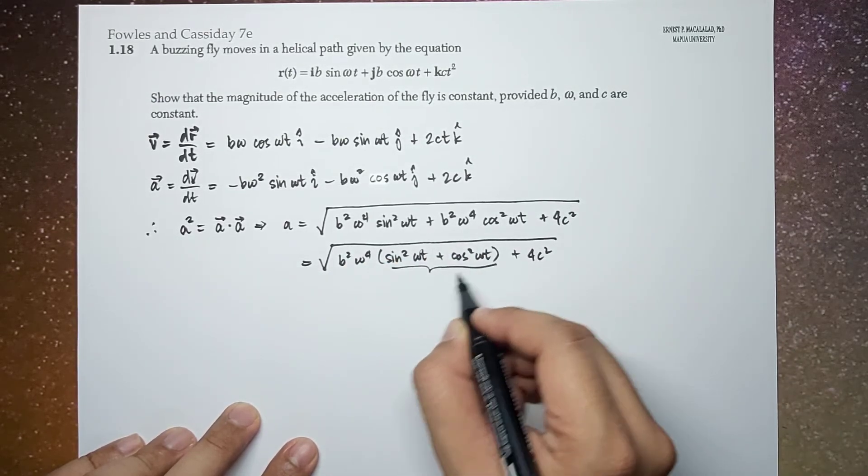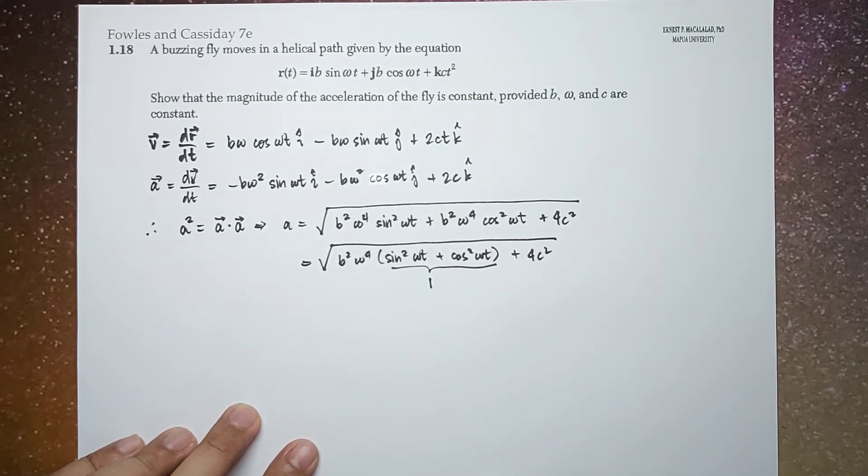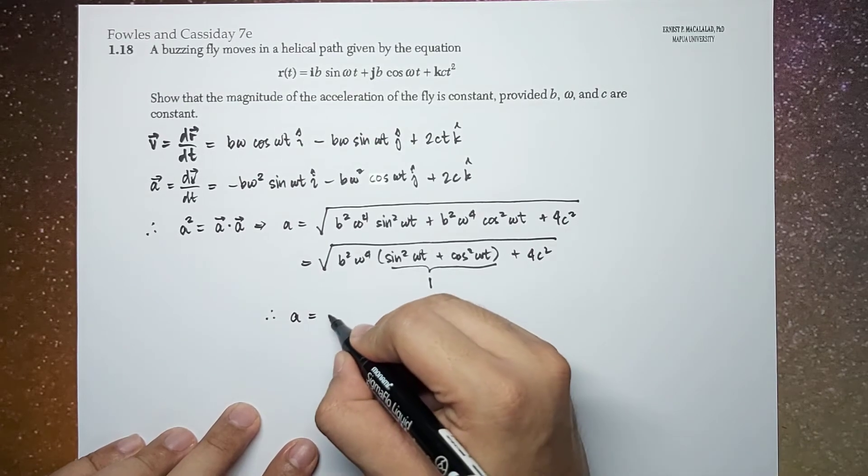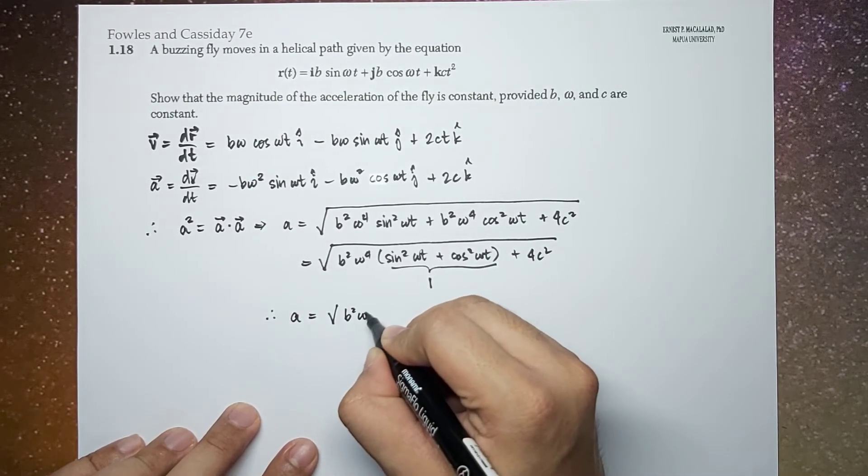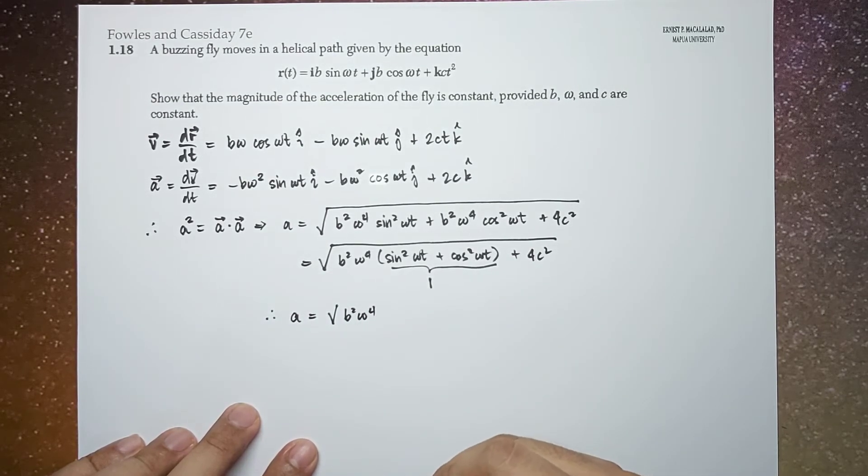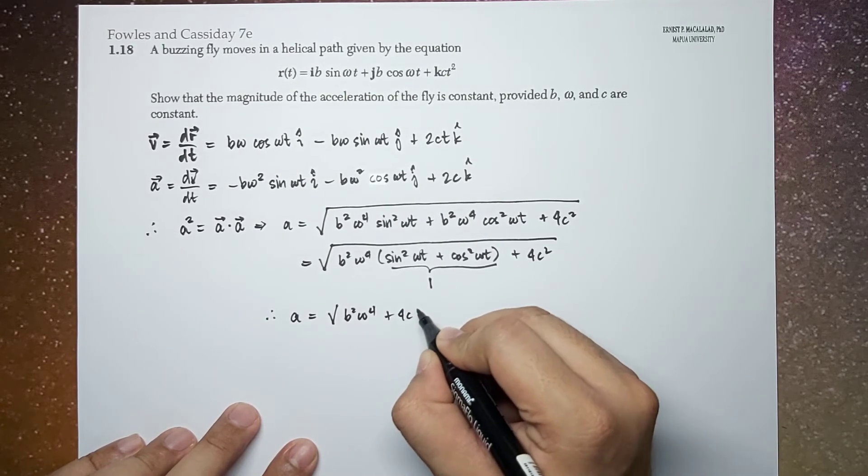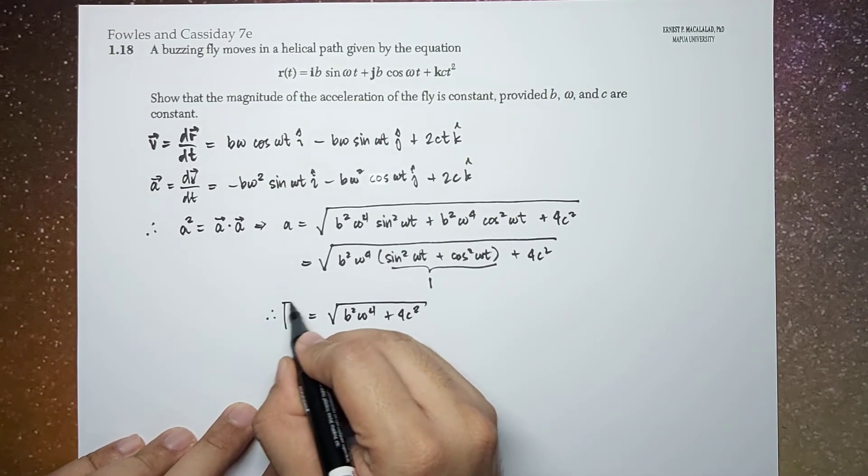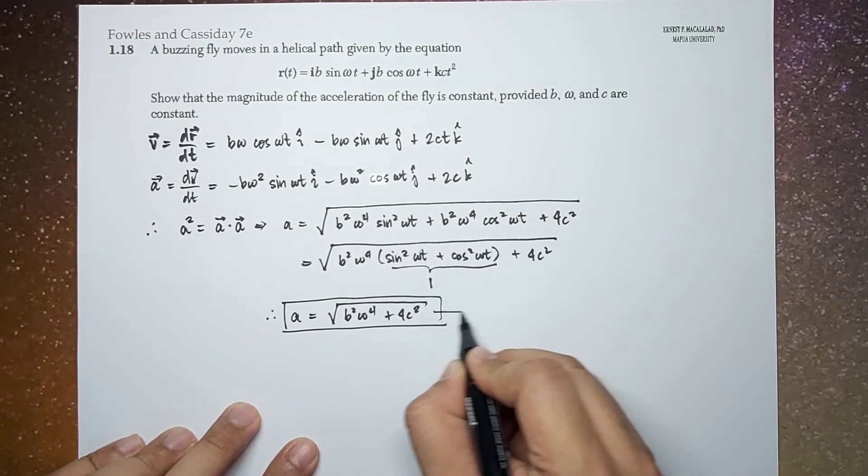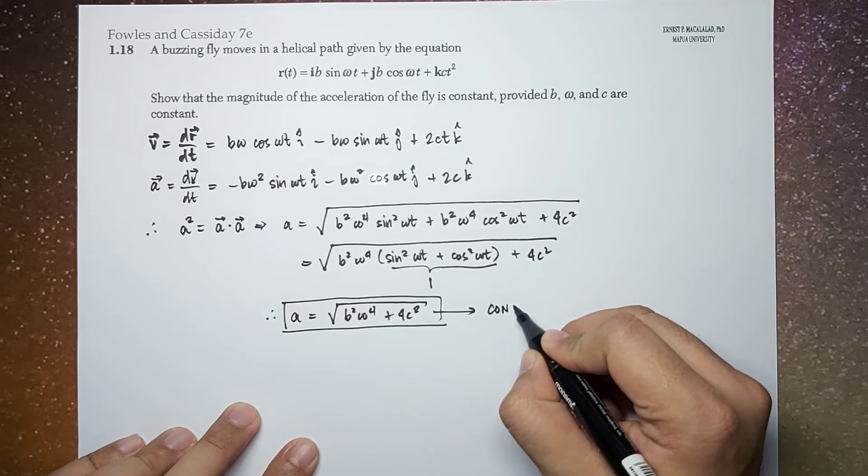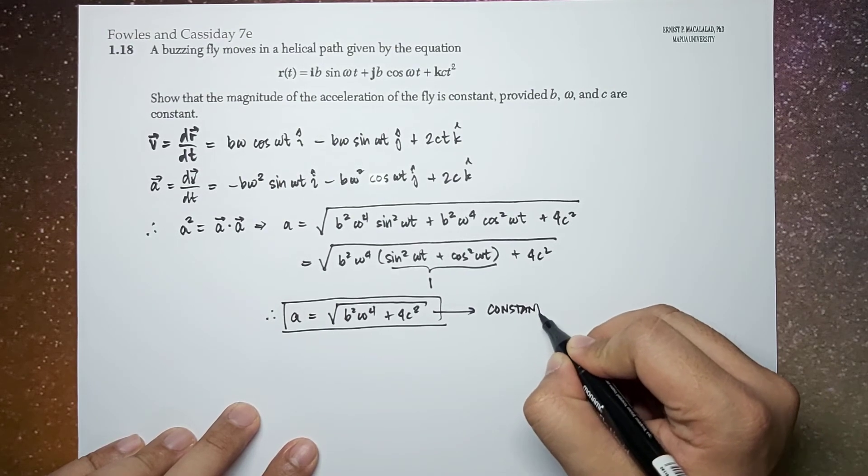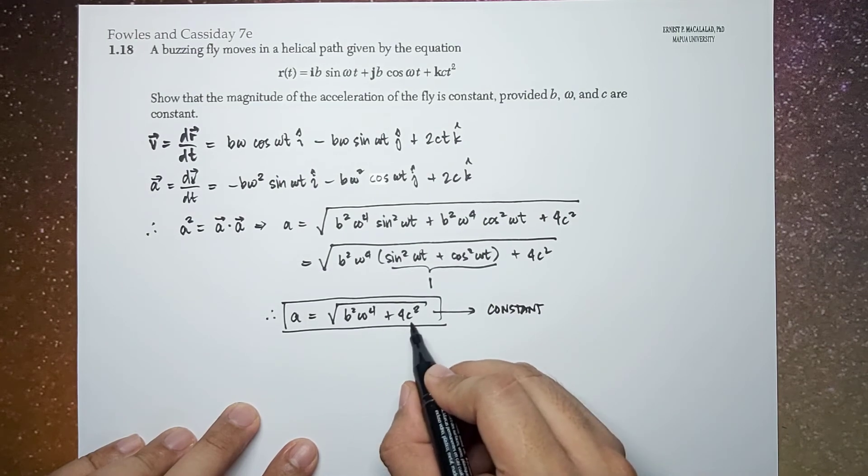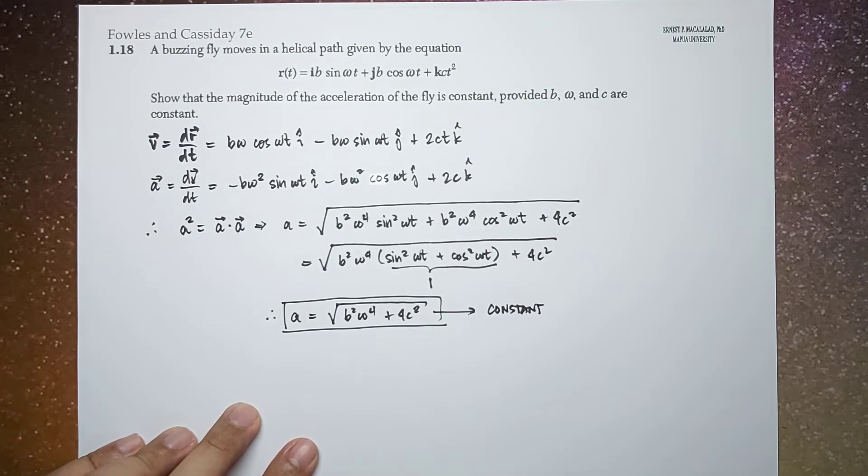This is equal to 1. So therefore, the acceleration is simply the square root of b squared omega to the 4th plus 4 c squared. And you know that this is a constant because b, omega, and c are all constant.